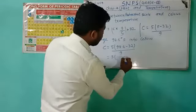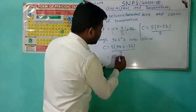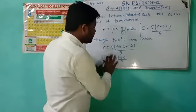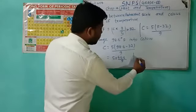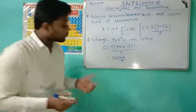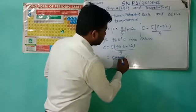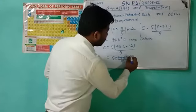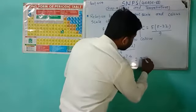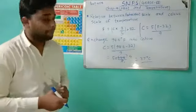Calculating: 98.6 minus 32 gives 66.6, and 66.6 divided by 9 gives 7.4. Then 7.4 multiplied by 5 gives 37 degree Celsius. This is the normal body temperature of a human being.